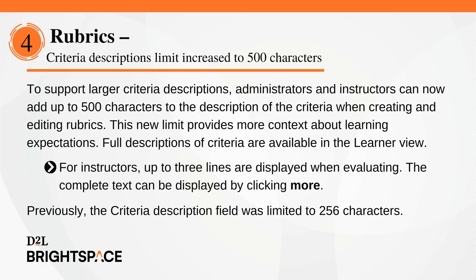To support larger criteria descriptions, administrators and instructors can now add up to 500 characters to the description of the criteria when creating and editing rubrics. This new limit provides more context about learning expectations. Full descriptions of criteria are available in the Learner View. For instructors, up to three lines are displayed when evaluating; the complete text can be displayed by clicking More. Previously, the Criteria Description field was limited to 256 characters.